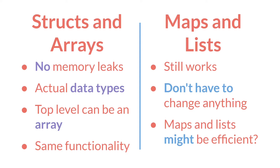That said, maps and lists still work, and as noted, they added a couple of additional functions to make them work a little bit better, so you don't have to change anything if you don't want to. I can also see the possibility that maps and lists might be more efficient — though this is pure speculation. At least when 2.31 first came out, structs were not the most efficient data type. Additionally, using invalid variable names, like having spaces, makes a little more sense with maps. You can do this with structs in 2.31, but you won't be able to use the dot accessor. So there may still be a couple of limited use cases for maps and lists.